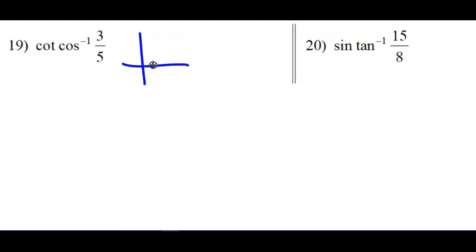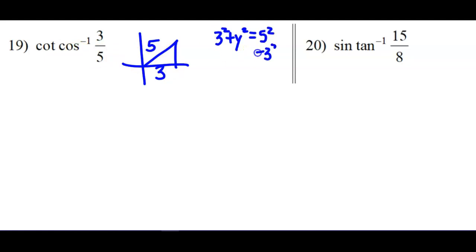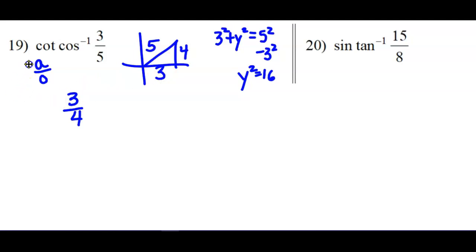This is the same question — it starts out the same. Cosine is adjacent over hypotenuse, it's positive, so it's in quadrant 1. But now it wants the cotangent, so we do have to do the Pythagorean theorem. 25 minus 9 is 16, square root that and we get 4. Cotangent, instead of opposite over adjacent, we'd have adjacent over opposite. Tangent is y over x, so cotangent is x over y, which gives us 3 over 4.